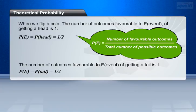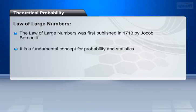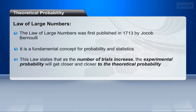What do you observe from the theoretical probability values of getting heads or tails? Is the experimental probability value always the same as the theoretical probability value? To answer this, we should know the Law of Large Numbers. First published in 1713 by Jacob Bernoulli, it is a fundamental concept for probability and statistics. This law states that as the number of trials increases, the experimental probability will get closer and closer to the theoretical probability.